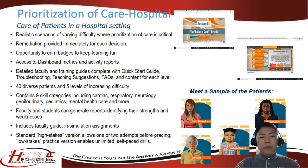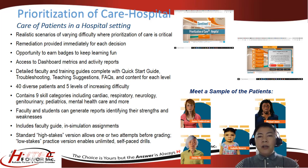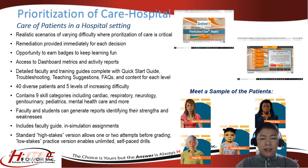The hospital prioritization module provides access to dashboard metrics and activity reports, a detailed faculty guide, 40 diverse patients, and five levels of increasing difficulty. It contains nine skill categories including cardiac, respiratory, neurology, genitourinary, pediatrics, mental health care, and more. Faculty and students can generate reports identifying their strengths and weaknesses. It has a standard high-stakes version allowing one or two attempts before grading — giving students a second chance to improve performance before the final grade is finalized — and a low-stakes practice version that enables unlimited self-paced drills.